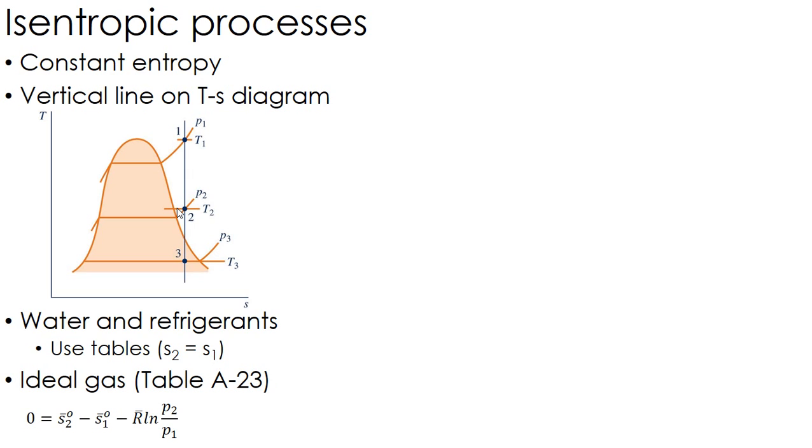For ideal gases in Table A23, the S-knot bar (where the bar means molar form and the knot refers to specific entropy at a reference pressure) - entropy depends both on pressure and temperature, but it's only tabulated in terms of temperature.